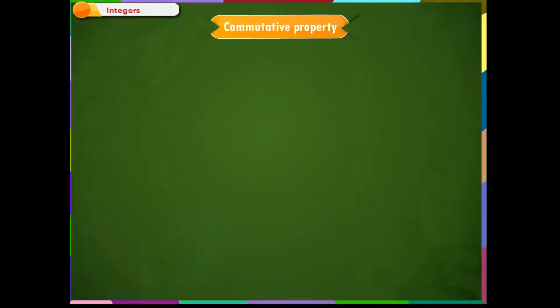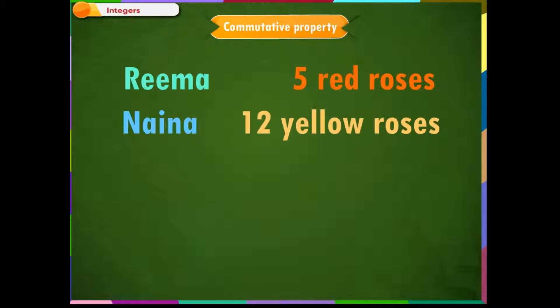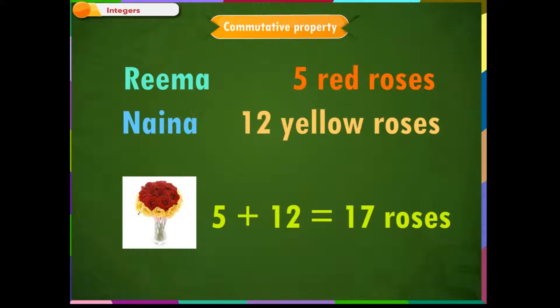Commutative Property. Rima has 5 red roses and her friend Naina has 12 yellow roses. They decided to put these roses in a flower vase. Rima put her flowers first and then Naina put her flowers. So, there are in total 5 plus 12 equal to 17 roses in the flower vase.